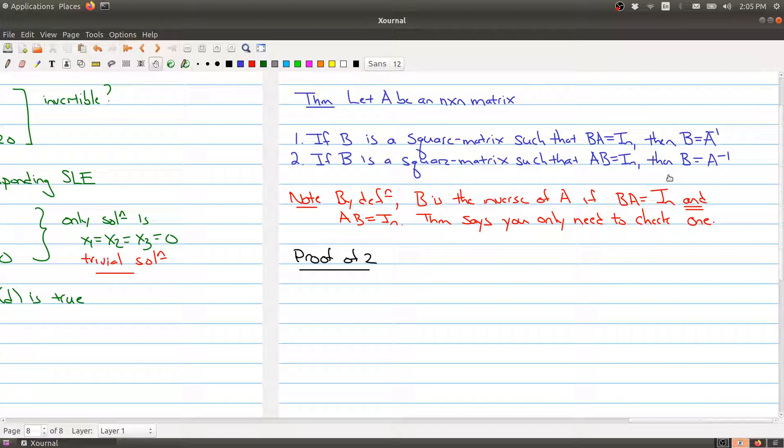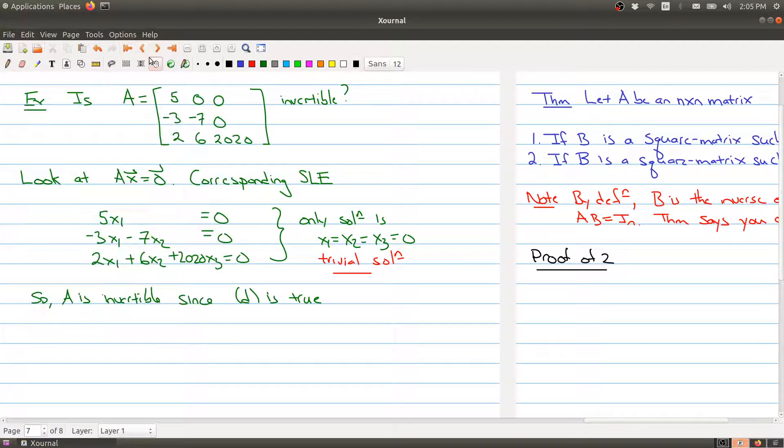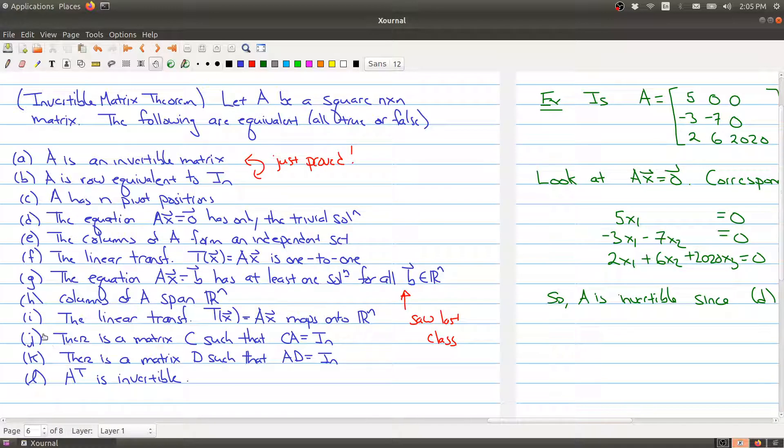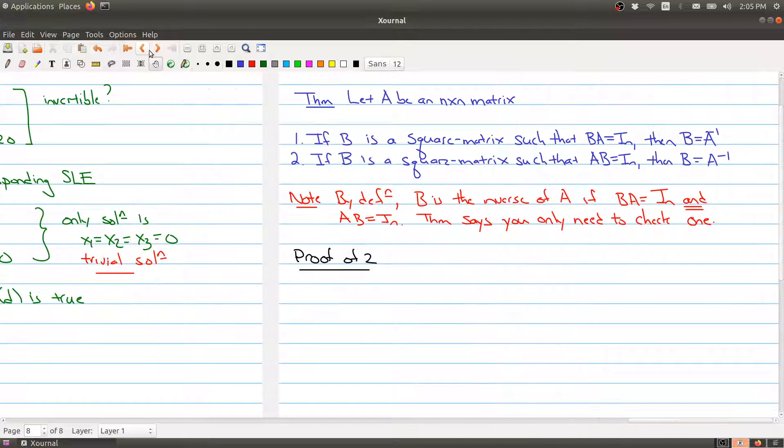That's what this theorem is saying, and that goes back to what the last part of this theorem, J and K, are saying. That if you can find something that multiplies on the left or on the right to give you the inverse, then you know that your matrix is the inverse. So let me just give you, instead of a proof—I already gave you a long proof earlier—how about I just give you the proof of two.